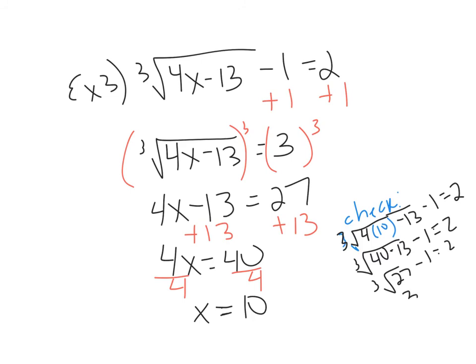Cube root of 27 is 3. 3 minus 1 is 2. So does 2 equal 2? Yes, check. Now we can box it. We are done.